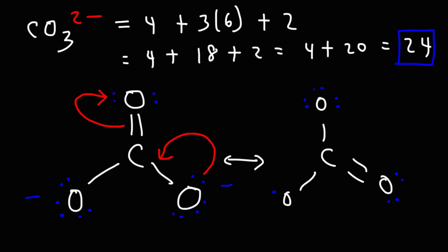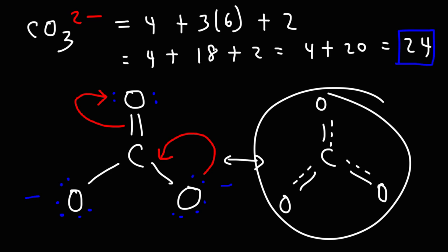So let me see if I can draw the resonance hybrid. So that third double bond, we can represent it with a dashed line to indicate that that double bond is shared among the three oxygen atoms. This is known as a resonance hybrid.